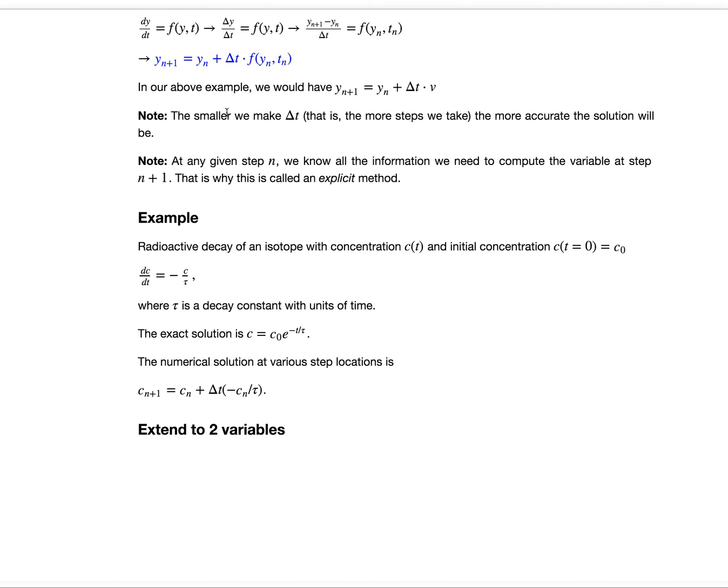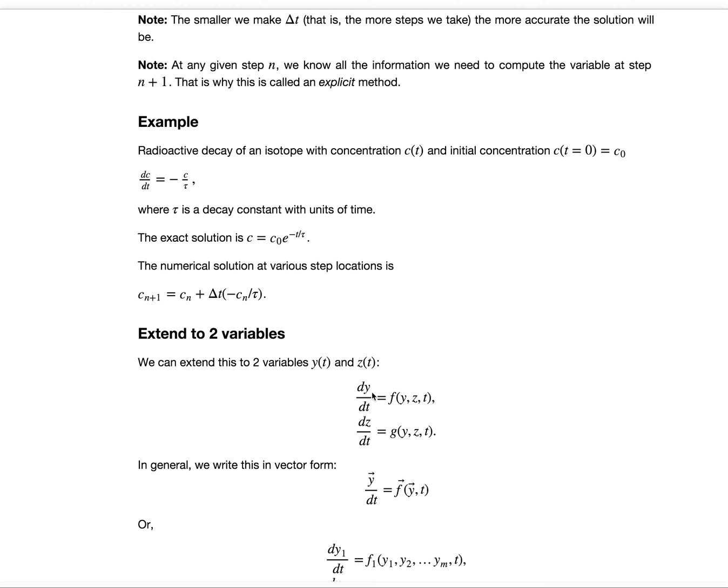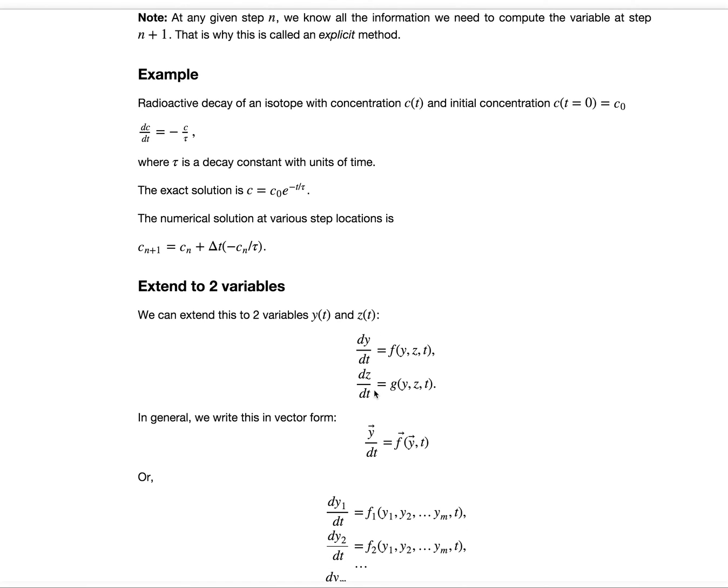We can extend this example to two variables. Say we have variables y of t and z of t. In this case, we would have two differential equations, dy dt equals f of y z t and dz dt equals g, a different function, of y z t. Here we also need two initial conditions, y0 and z0. In general, when we have two or more variables, we want to write that in a vector form. dy vector dt equals the vector of functions which are functions of the vector of unknowns.